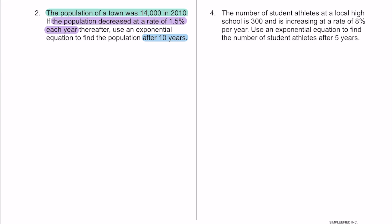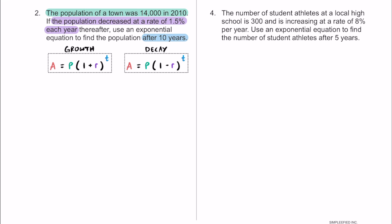Let's take this information and decide if we are dealing with a growth or decay function. There is a key word in this problem — the word "decreased." So we know the population is going down over time, and we're going to use the decay function as opposed to the growth one. The only difference between the two formulas is this minus versus plus sign; otherwise everything stays the same.